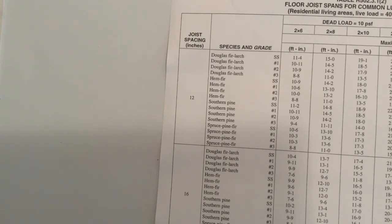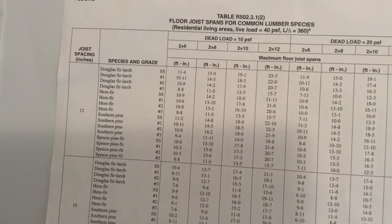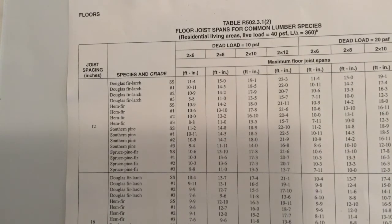Those grades of lumber are explained in your book. A further note on that: there are two grading agencies — two associations that set the standards for grading. One is the Southern Pine Inspection Bureau and the other is the Western Wood Products Association. They set the guidelines that we in the construction business use to determine the grade of the lumber.